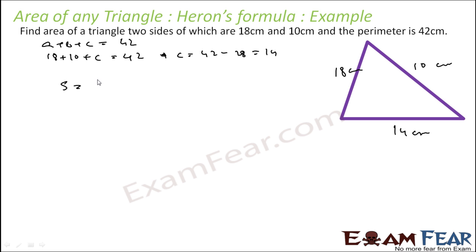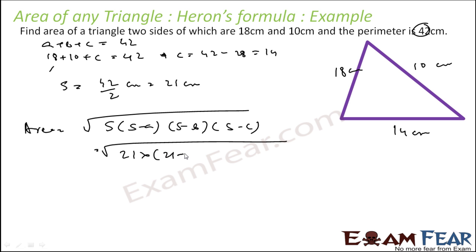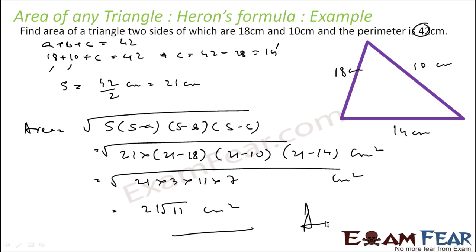Now we have all three sides. The semi-perimeter is 42 / 2 = 21 cm. Area = root of s(s−a)(s−b)(s−c) = root of 21 × (21−18) × (21−10) × (21−14) = root of 21 × 3 × 11 × 7 = 21√11 centimeter square.